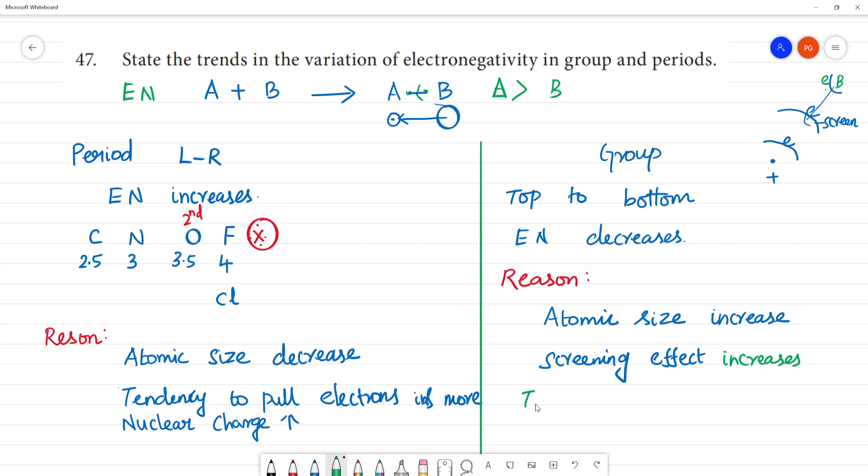So tendency to pull electron decreases. Atomic size increase, screening effect increase, electronegativity value decrease. So this is the trend along a group and a period. Clear?